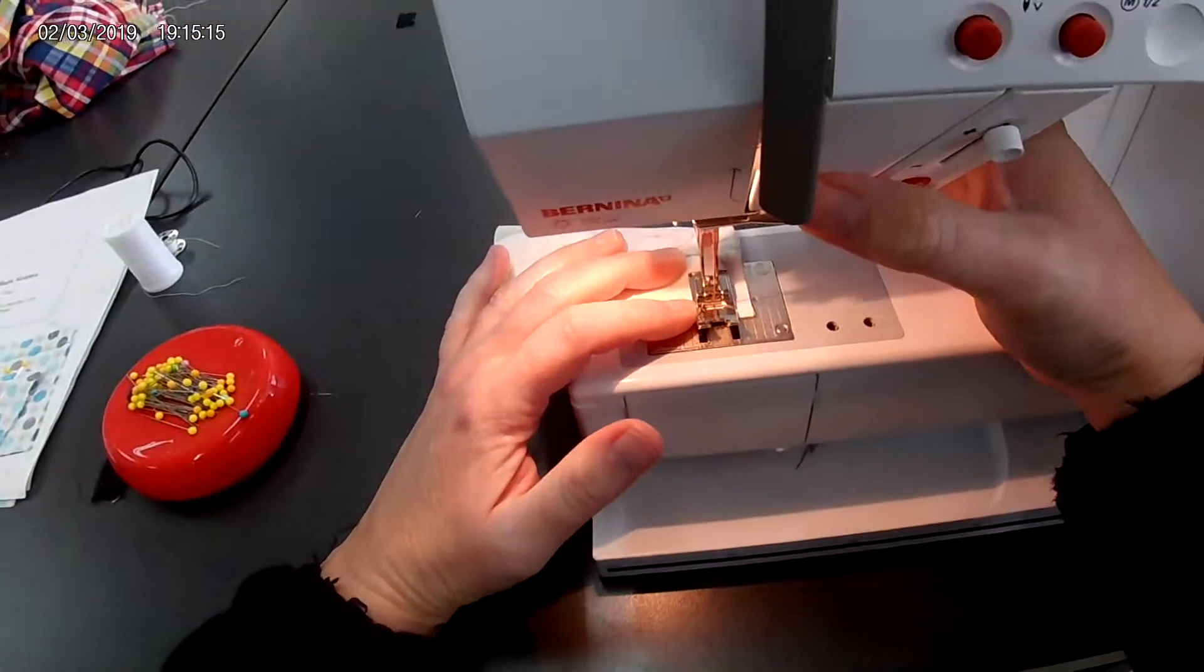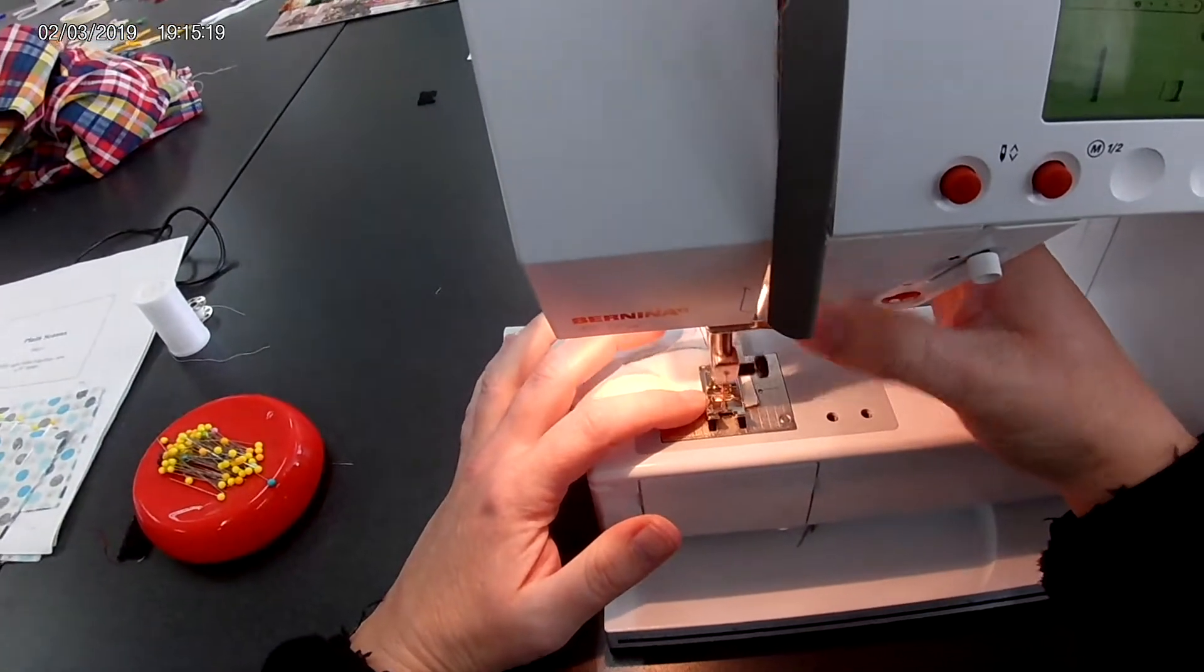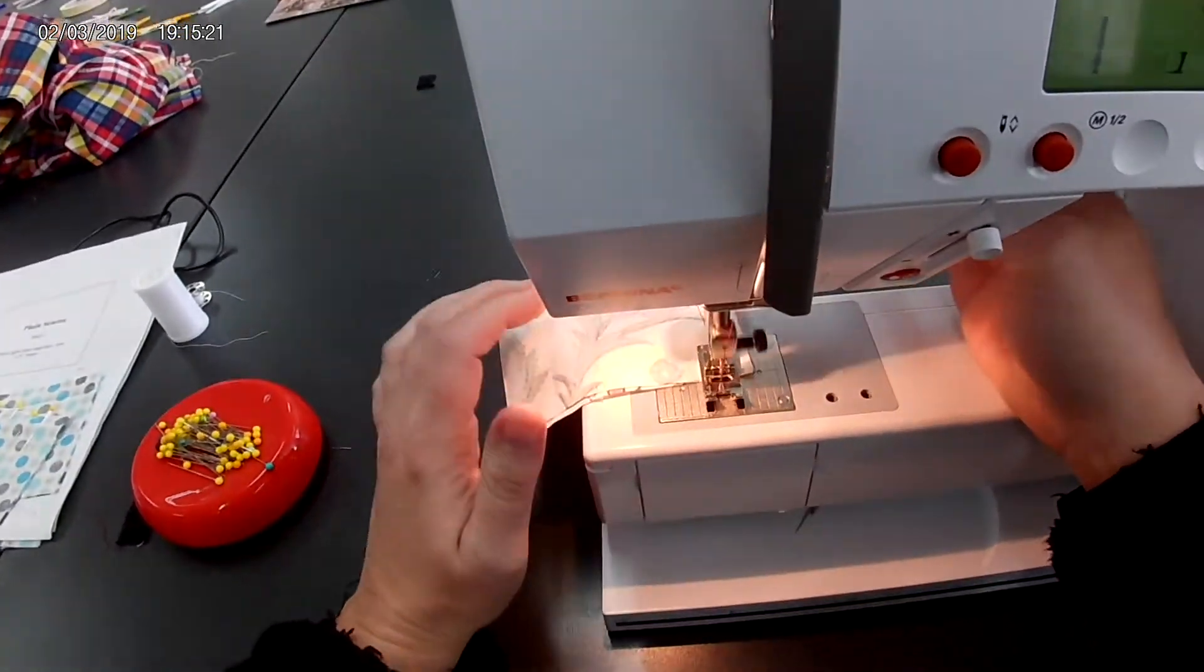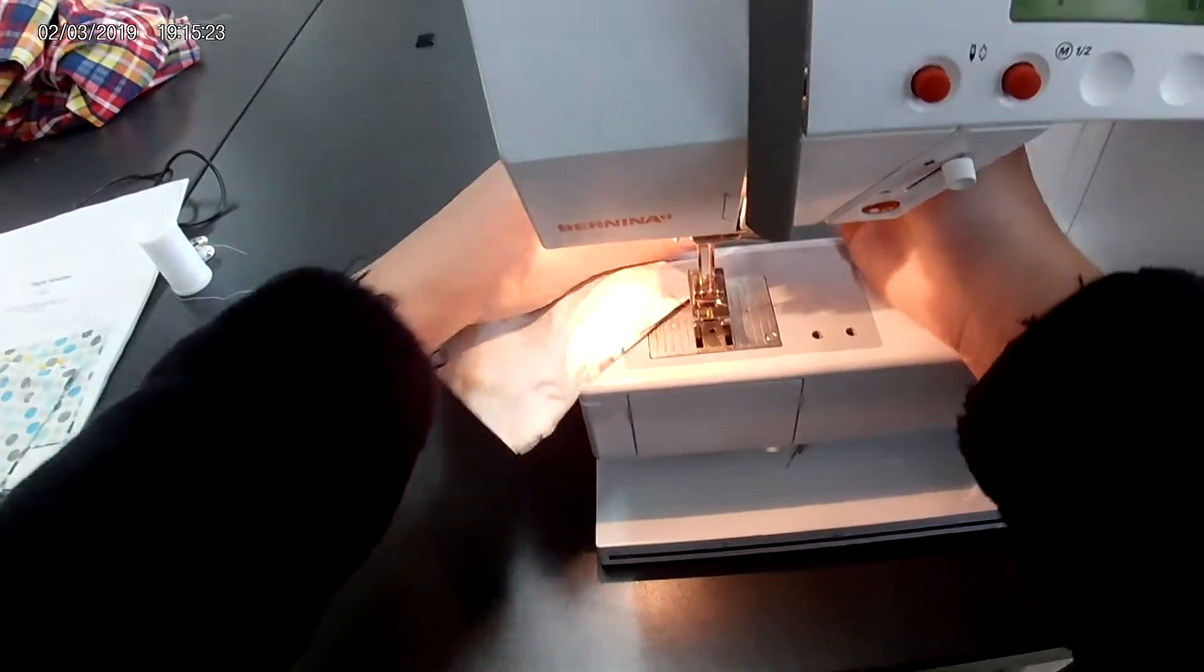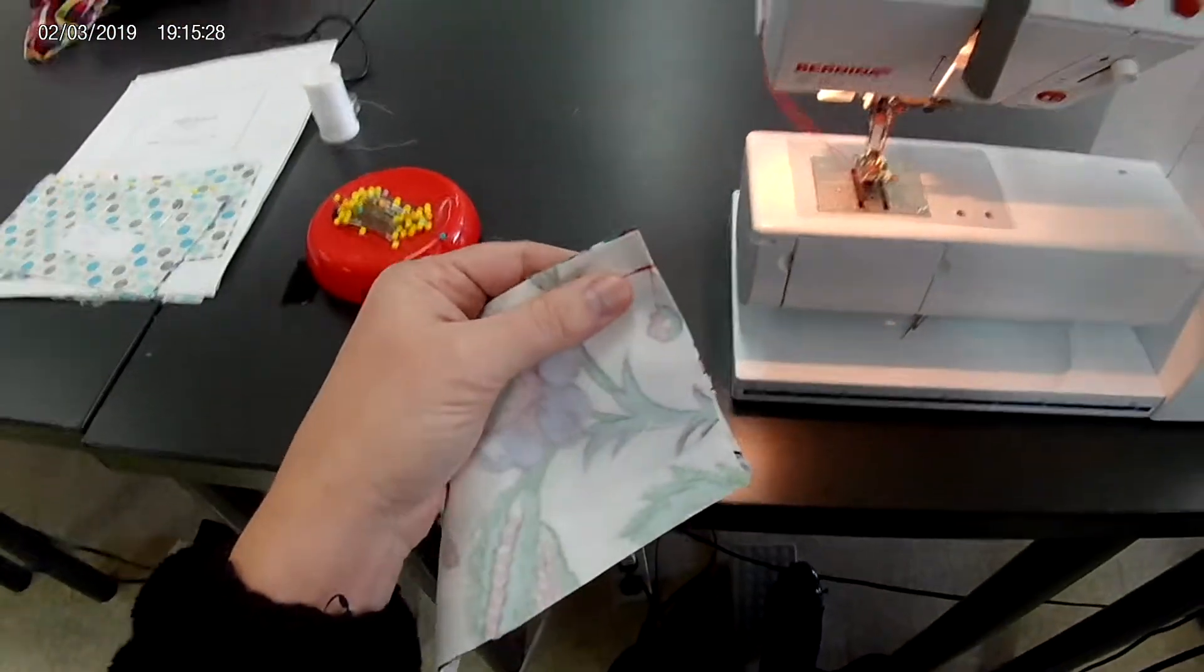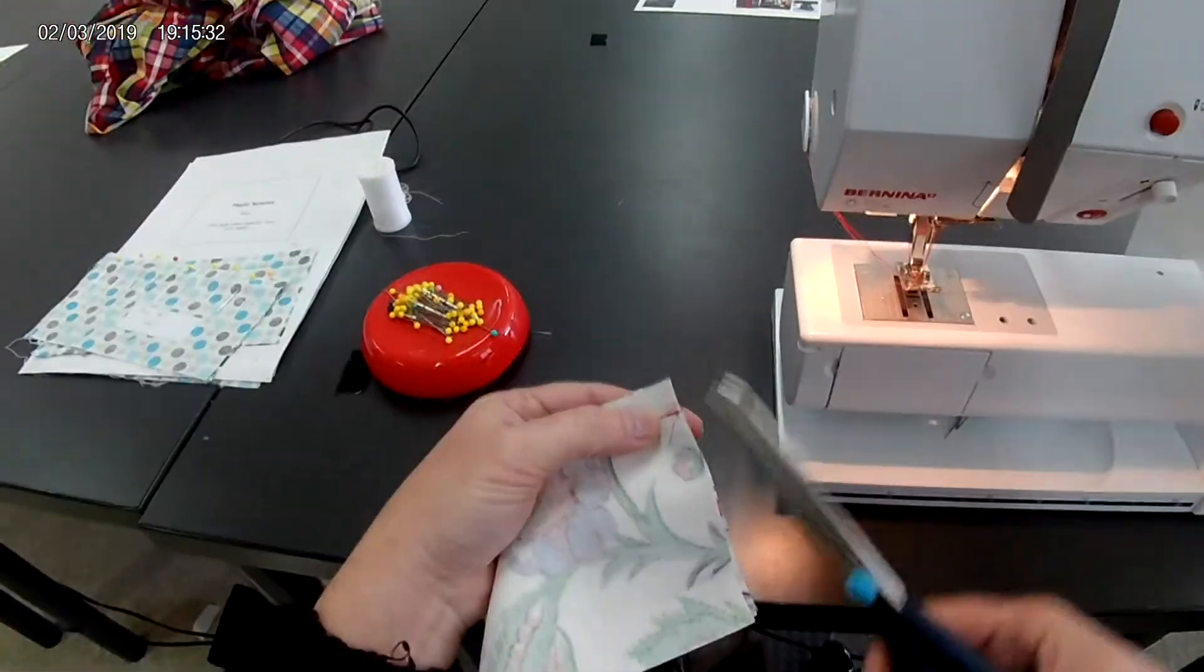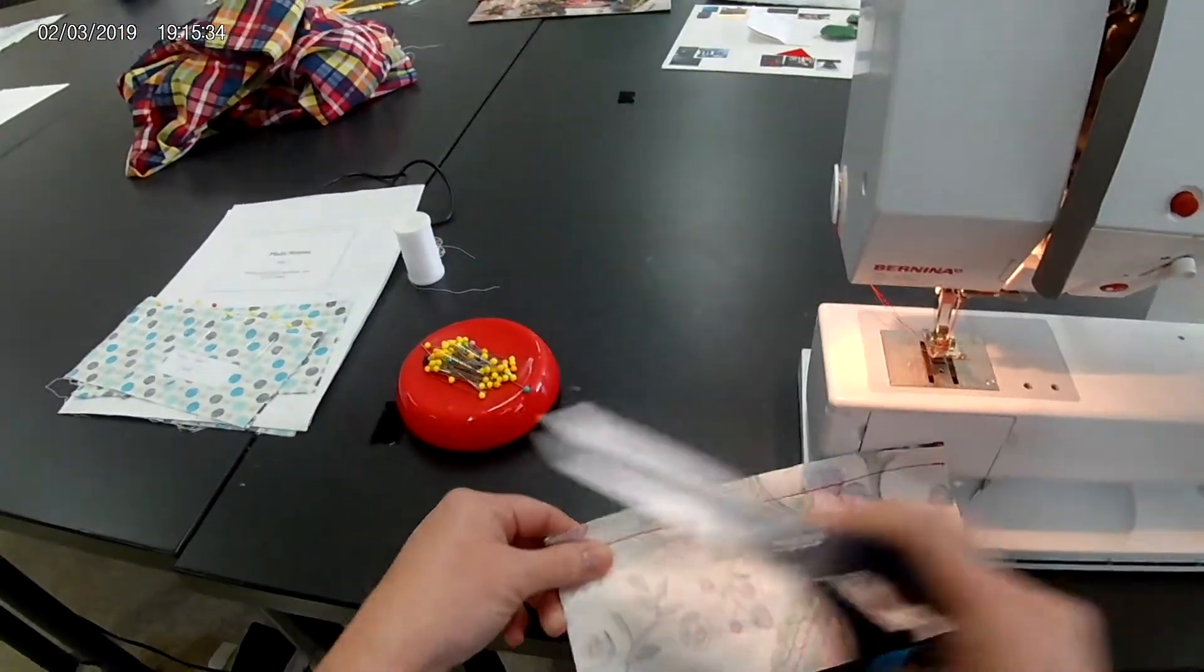When you get to the end, you are going to hold in the back button and go 3 stitches or so, and then let go and go forward. Lift up your presser foot and cut the threads on the side. I will use my scissors and trim the threads on both ends.